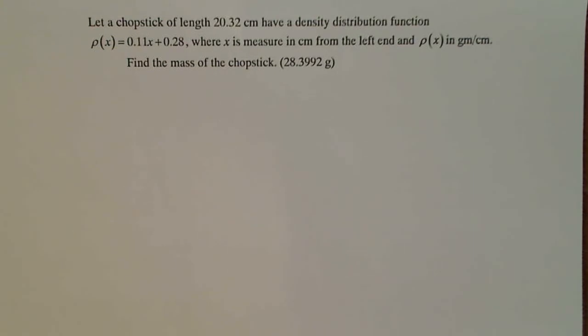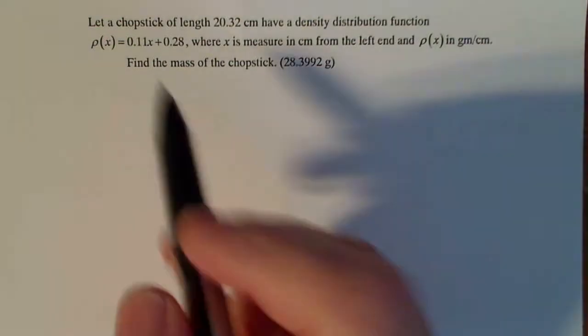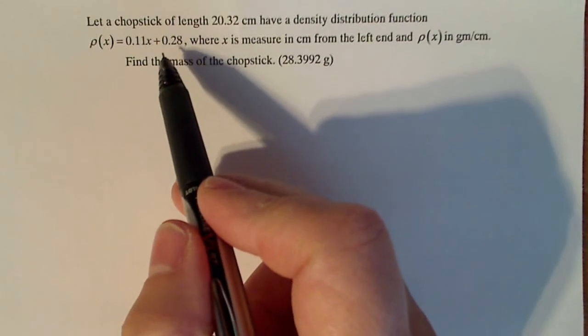So let's find the mass of the chopstick. Now if you've ever looked at a chopstick, you know that one end is thinner than the other. It's not like we can just calculate density times length and have it come out that easy. The density obviously isn't the same because we have a function for it.